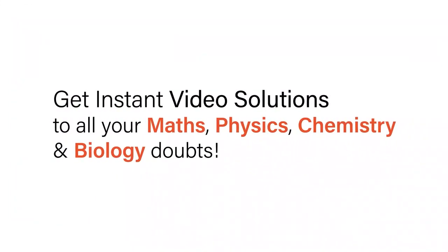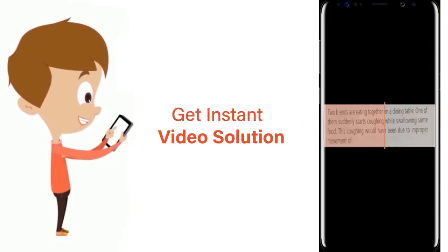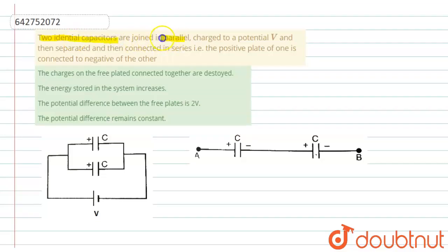With Doubtnet, get instant video solutions to all your maths, physics, chemistry and biology doubts. Just click the image of the question, crop the question, and get instant video solution. Download Doubtnet app today. Two identical capacitors are joined in parallel and charged to a potential V.